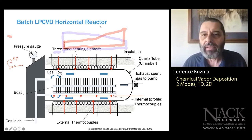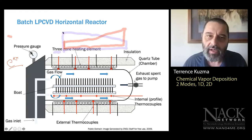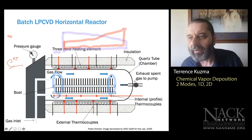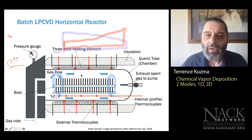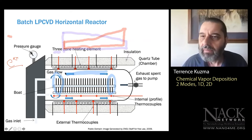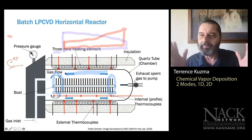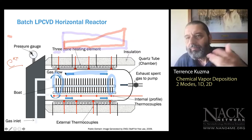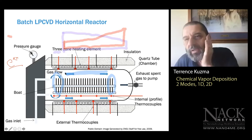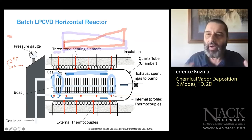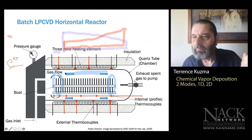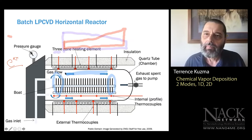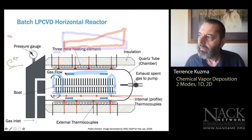So across the LPCVD batch, the deposition is uniform — though we put dummy wafers at the front and back ends where conditions are slightly off. The process wafers are in the middle, where conditions are well-controlled. That balance of chemical energy, heat, and gas flux is the elegant solution.